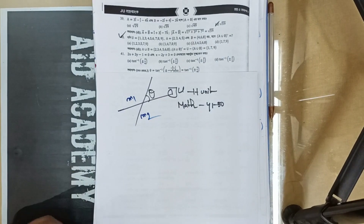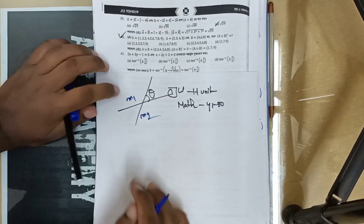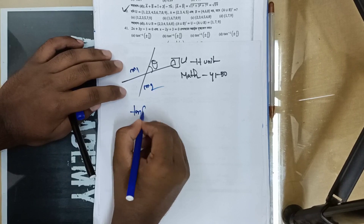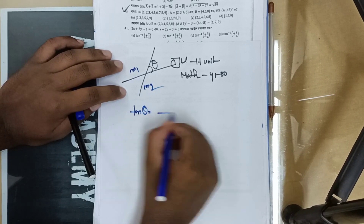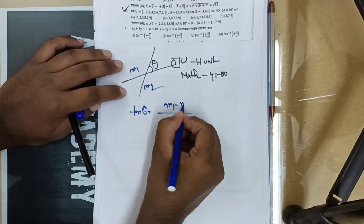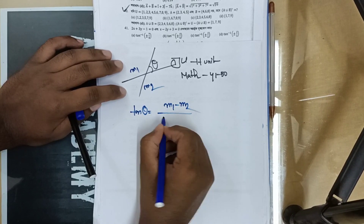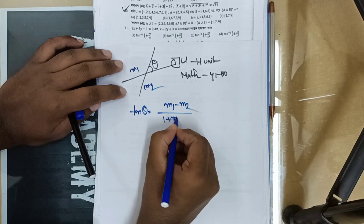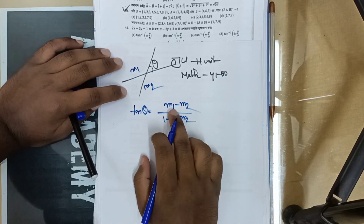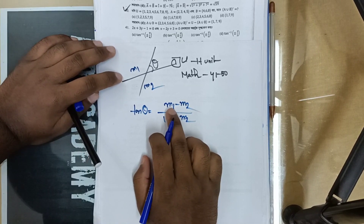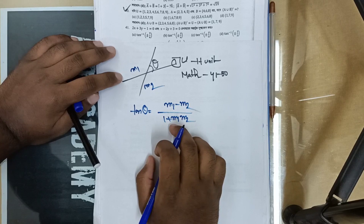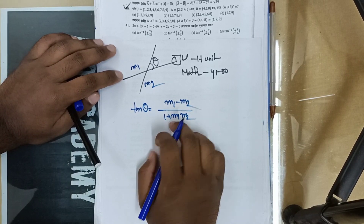The first line has slope m1, and the second line has slope m2. The angle between them is found using the formula: tan θ = (m1 - m2) / (1 + m1·m2). For the acute angle between two lines, the formula is m1 minus m2 divided by 1 plus m1·m2.